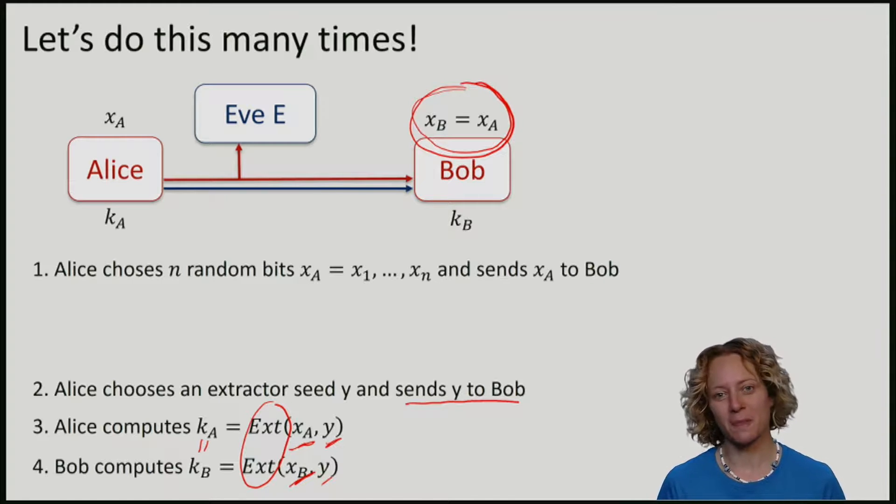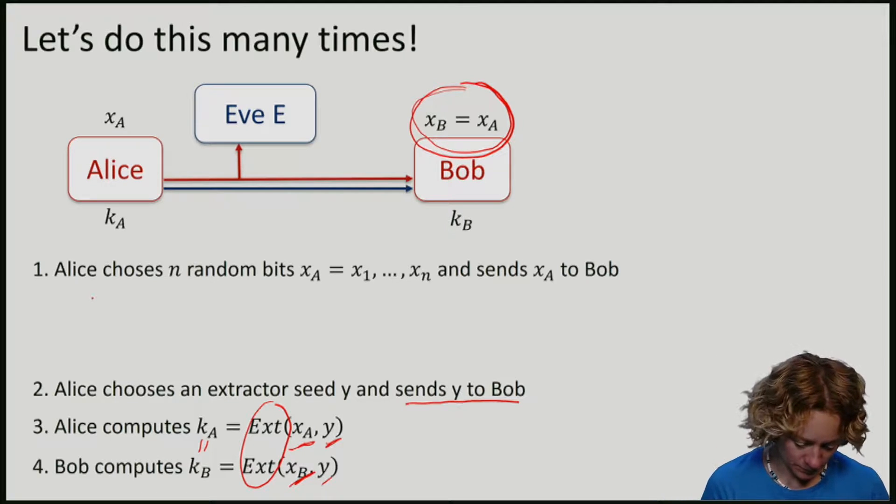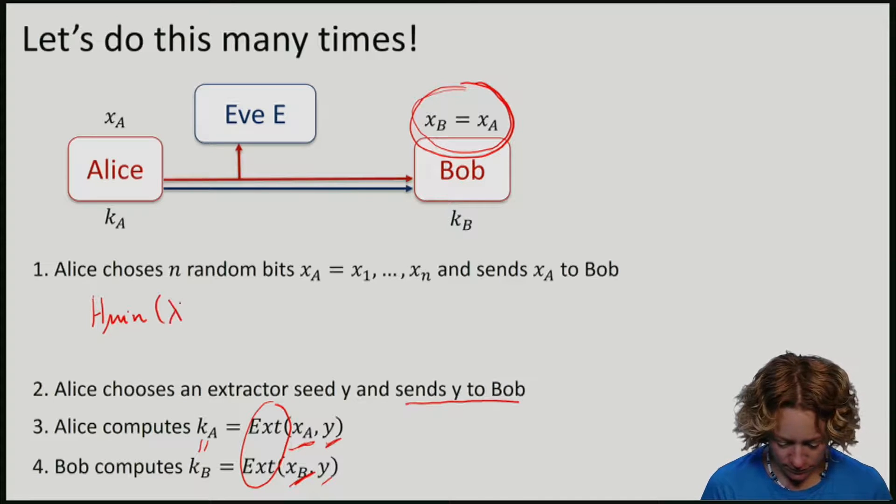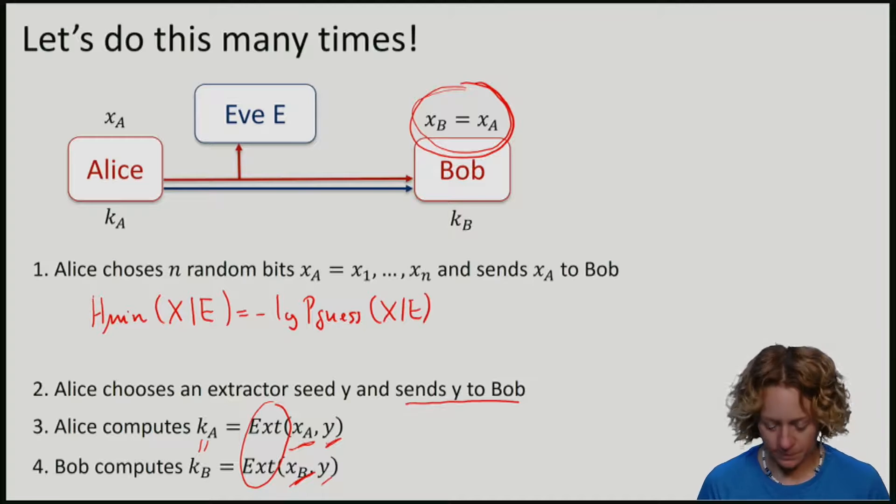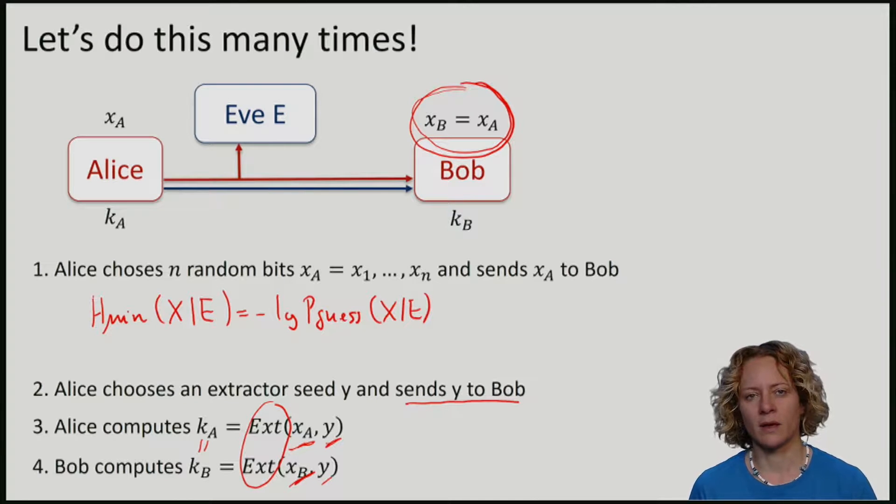Let's now think about why this protocol should be secure. In order to think about this, let's consider now the min entropy that Eve has about Alice's string x, given her information e. That's minus the log of the guessing probability. We've already computed the min entropy for just one bit, and now we will compute the min entropy for the entire string.